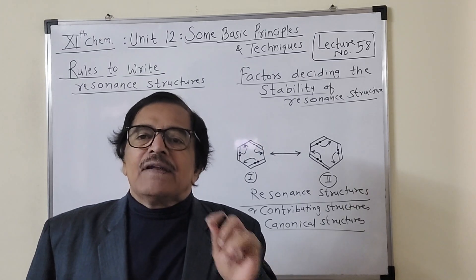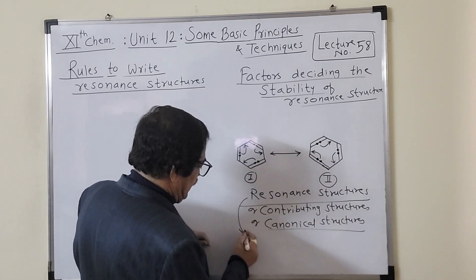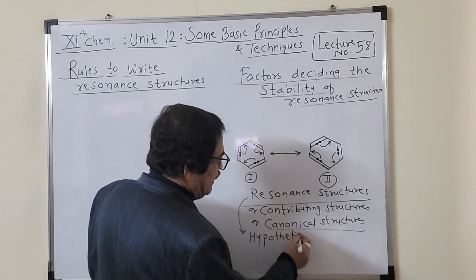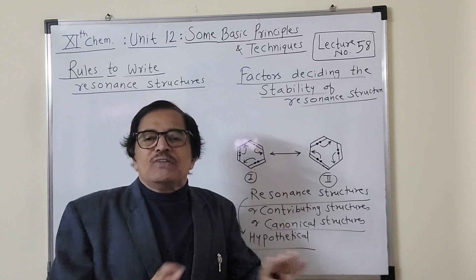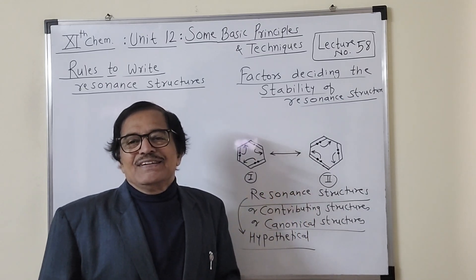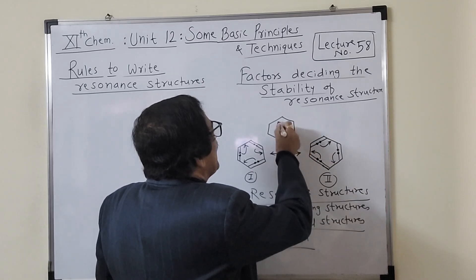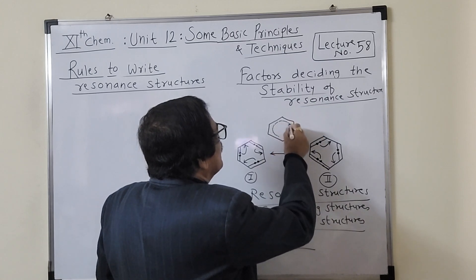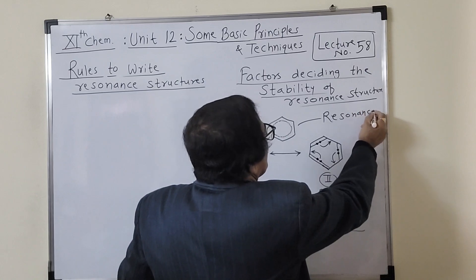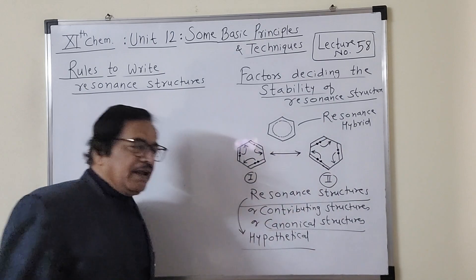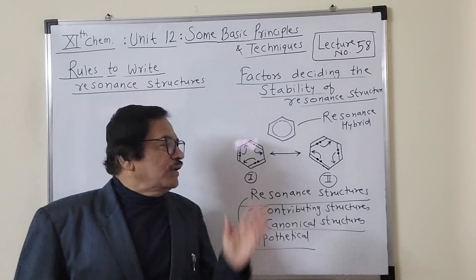Another important point: resonance structures are a hypothetical concept. In reality, neither structure 1 nor structure 2 will exist. The molecule is actually represented by one hybrid — the resonance hybrid — where the pi bond electron density is migrating all over the ring, across all six carbons. This structure is known as the resonance hybrid. So if asked in an MCQ, it is correct that resonance structures are hypothetical.